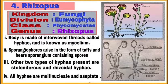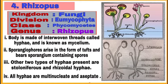Fourth organism is rhizopus. It is a fungus. Write its important features after writing the classification. The body of rhizopus is made of interwoven threads called hyphae, and it is known as mycelium. See the diagram — three types of hyphae are present. One: aerial hyphae, also called sporangiophores, which arise in the form of tufts and bear sporangia containing spores. The other two types are stoloniferous and rhizoidal hyphae. All hyphae are multinucleate and aseptate. Draw the diagram with pencil on the left side of your practical notebook.